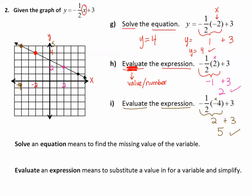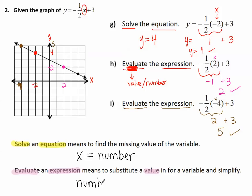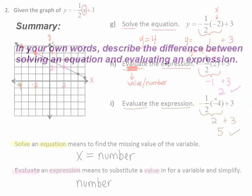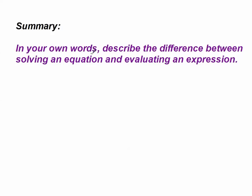Let's remember: when we see 'solve,' it's for an equation — that means finding the missing value of the variable, and the answer looks like x equals a number. When we see 'evaluate an expression,' we substitute a value in for the variable and simplify, getting just a number as an answer. Take a moment to write a short summary in your own words describing the difference between solving an equation and evaluating an expression.